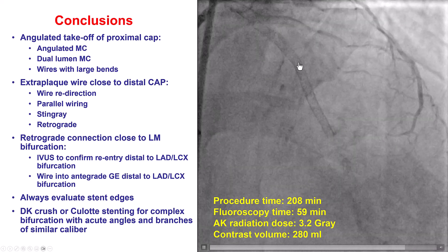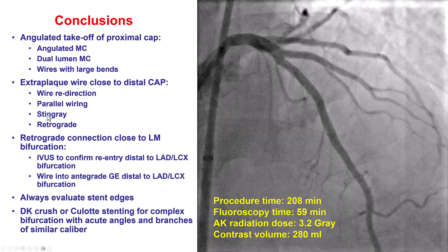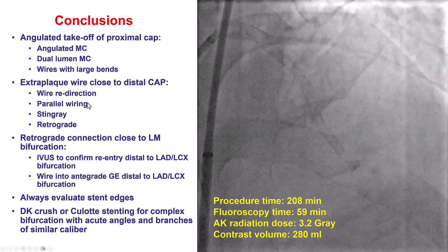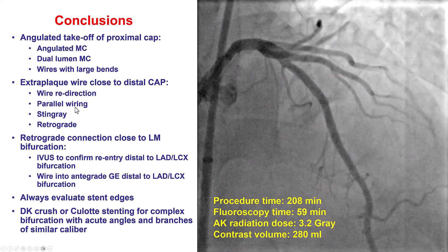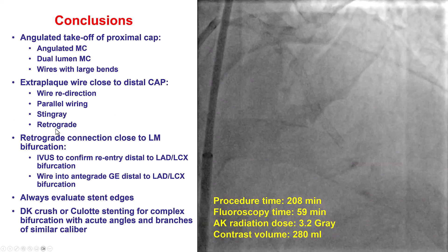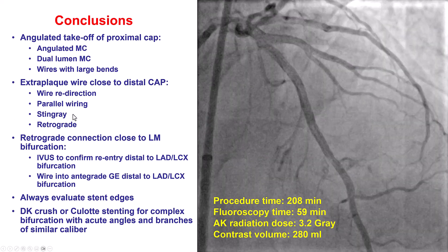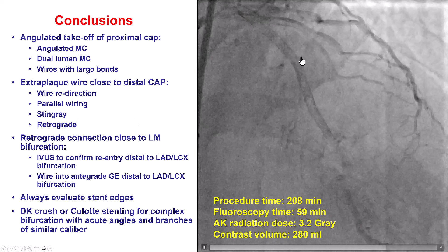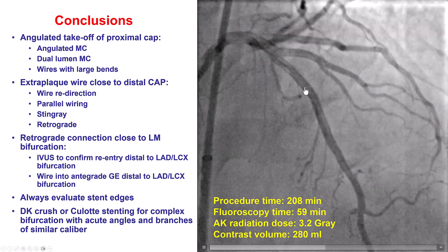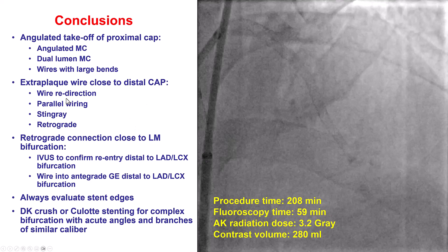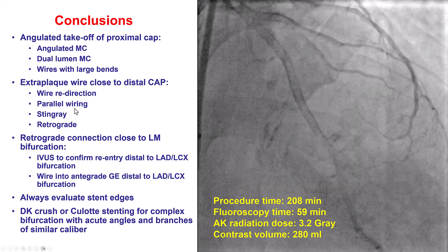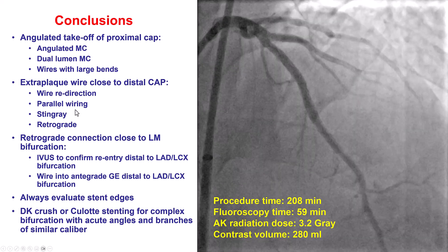In this case, the wire went extraluminal. When that happens, there are multiple options: redirect the wire, leave it in place and do parallel wiring, use the Stingray for reentry, or go retrograde. In this case we decided to go retrograde because we had good septal collaterals. But in other cases, parallel wiring, wire redirection, or Stingray could have been used.